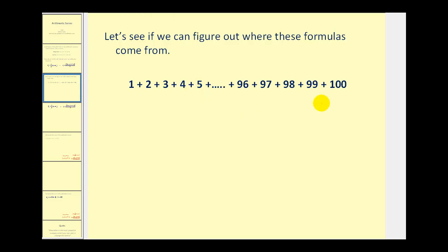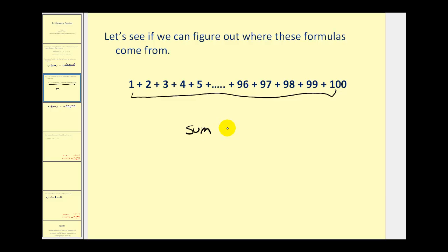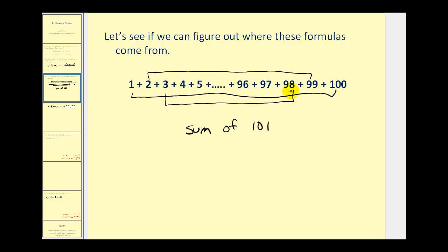The next thing we might do is start pairing up these numbers. If we start pairing these up we're going to notice a pattern. If we take the first term and add it to the last term, that has a sum of 101. And if we take the second term and add it to the second-to-last term, we'll also have a sum of 101. This pattern continues so we could continue pairing these up to have sums of 101.